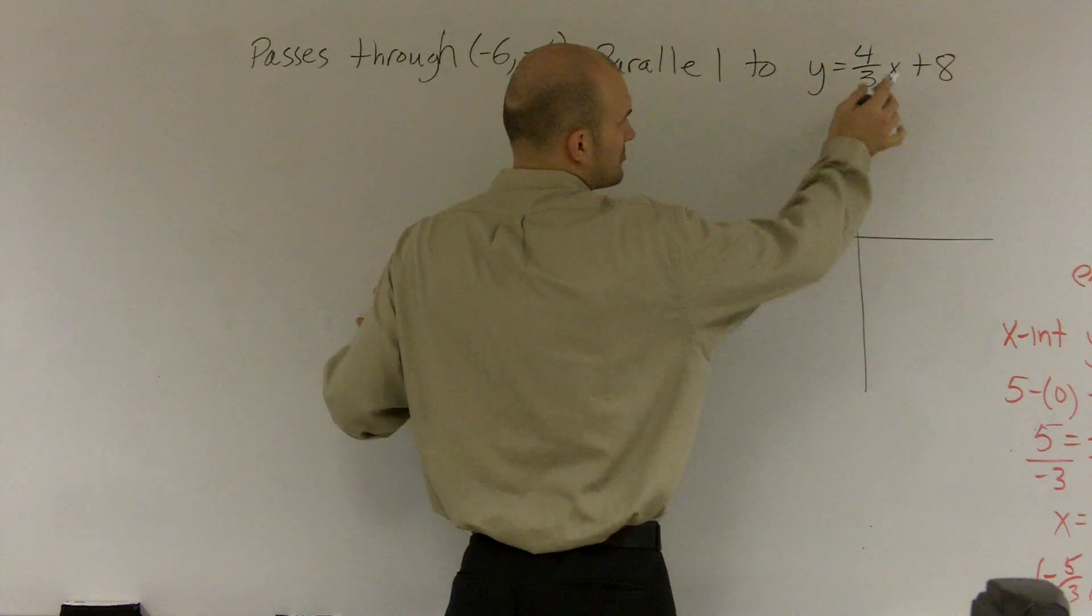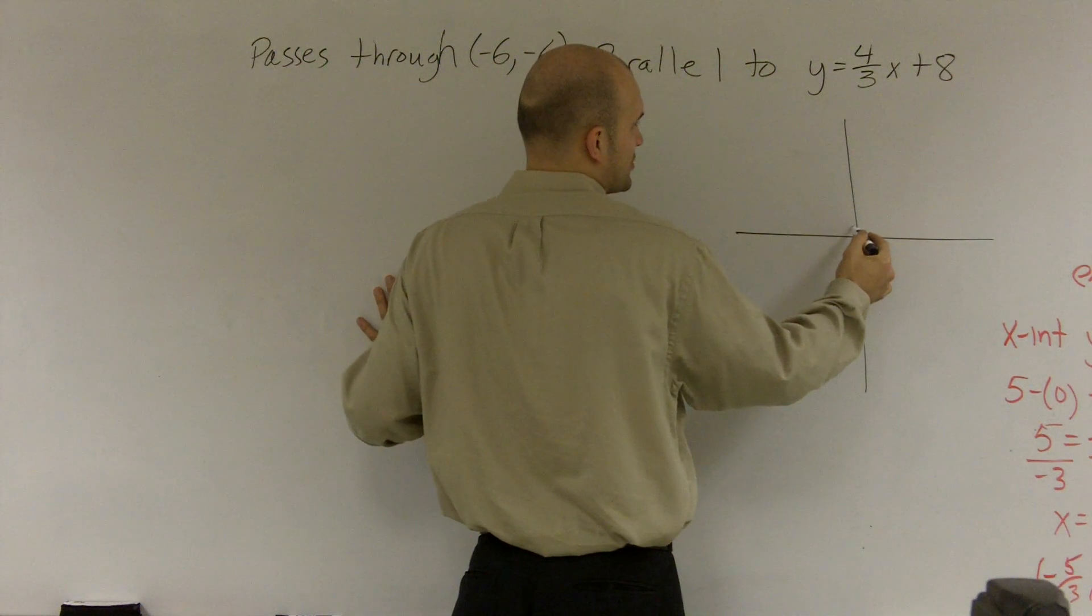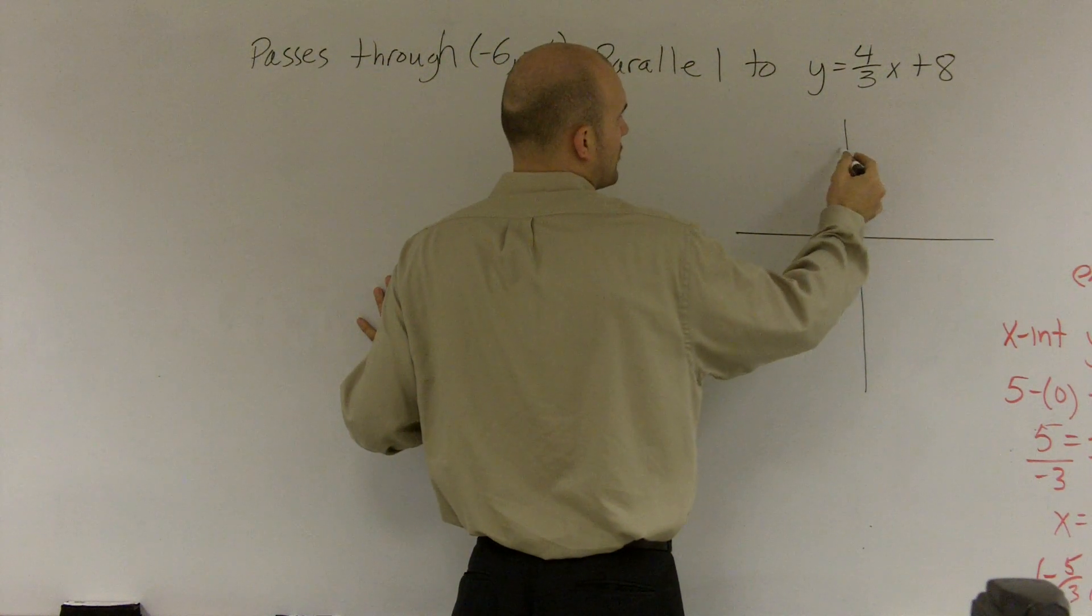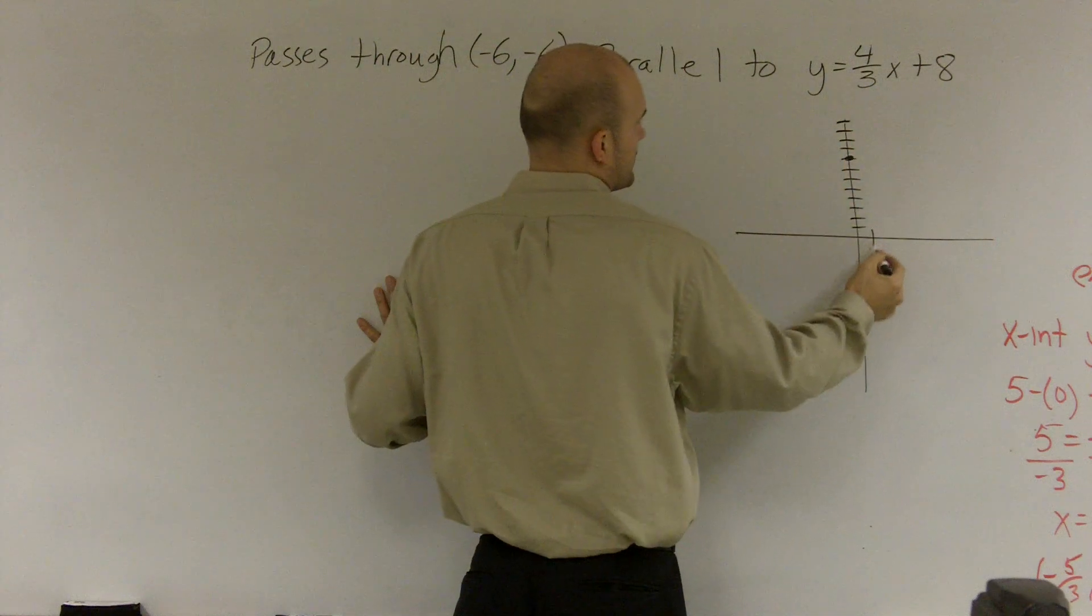If I had a y-intercept of 8, I'd go up 8: 1, 2, 3, 4, 5, 6, 7, 8. And then we go up 4: 1, 2, 3, 4, and over 3: 1, 2, 3.